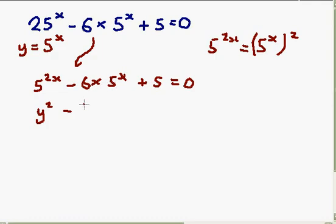We've also got 6 lots of 5 to the x. 5 to the x is now y, so it's minus 6 lots of y. Plus 5 is 0.